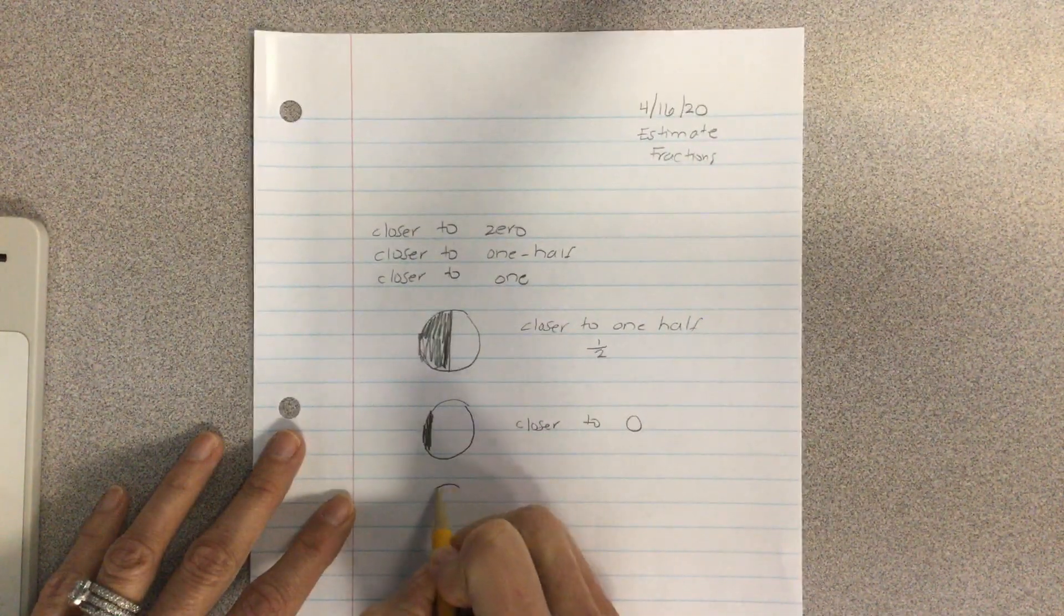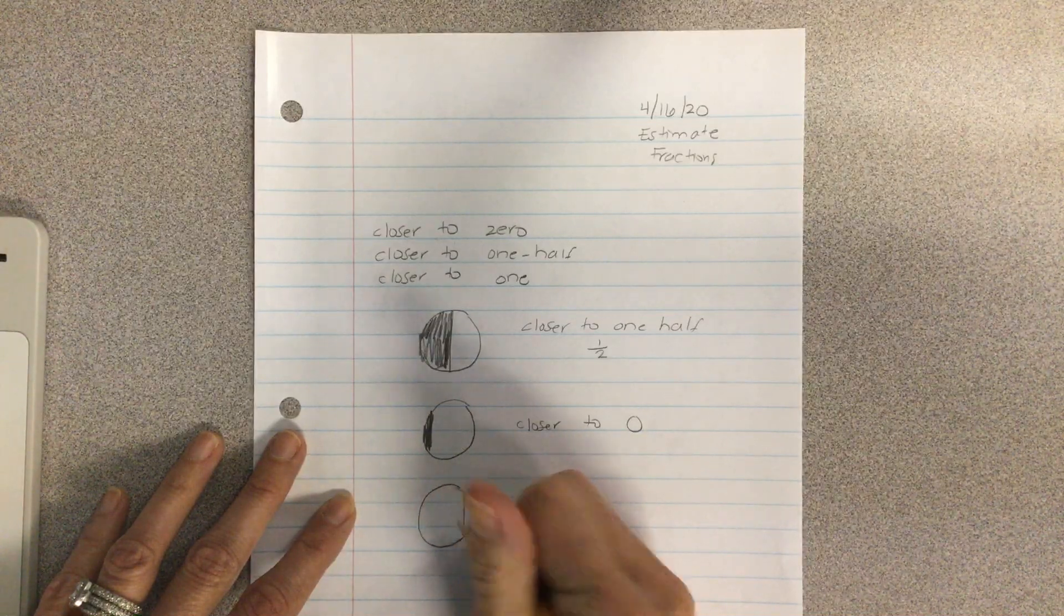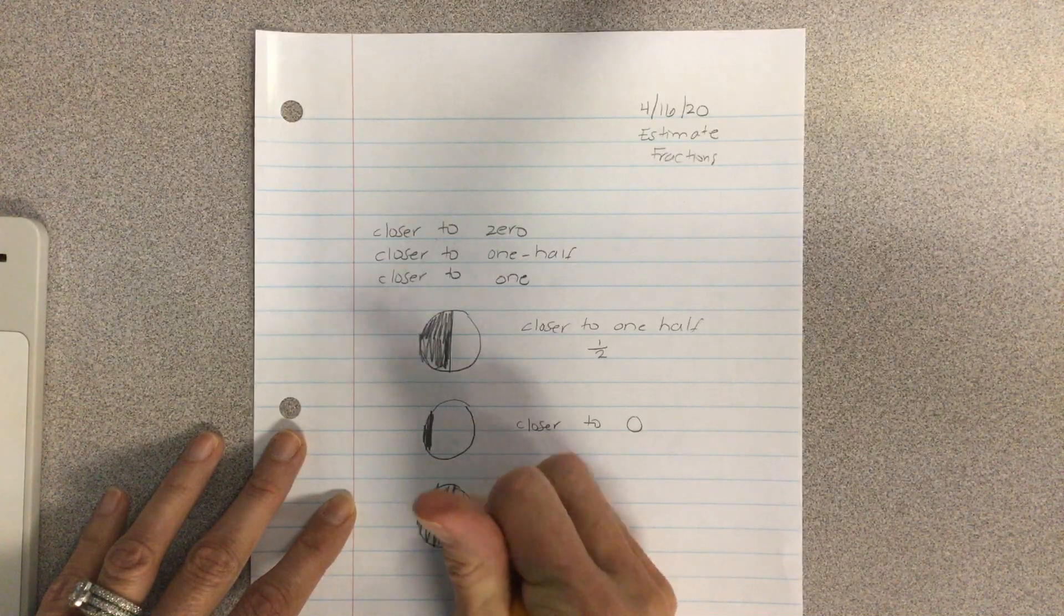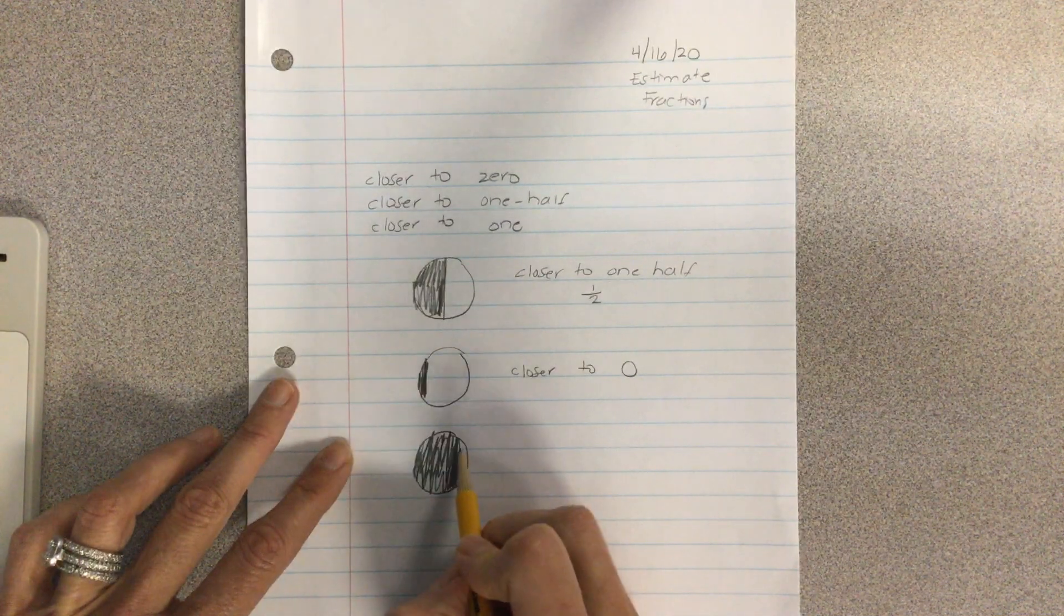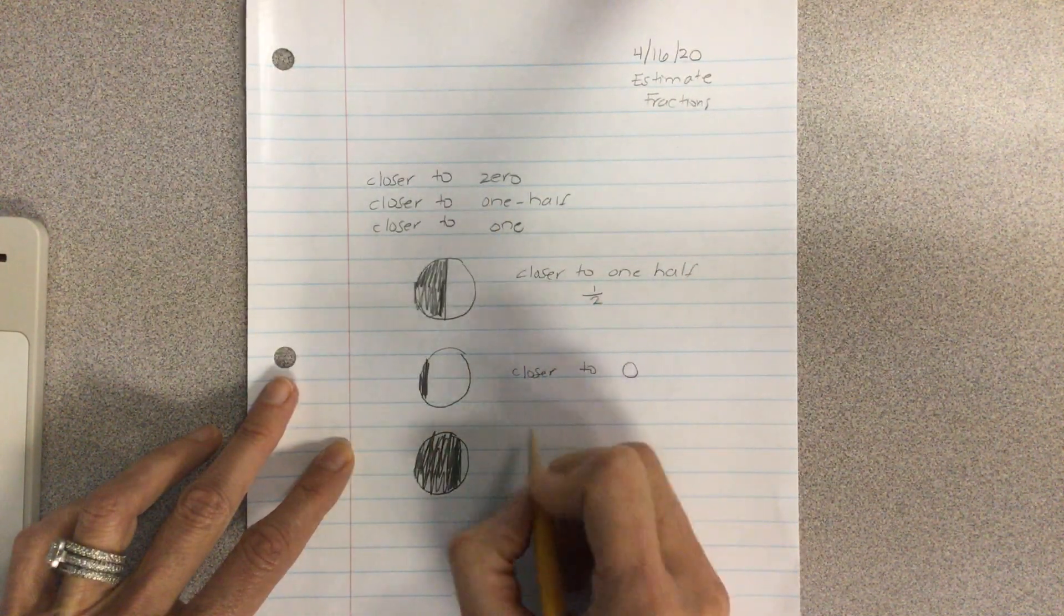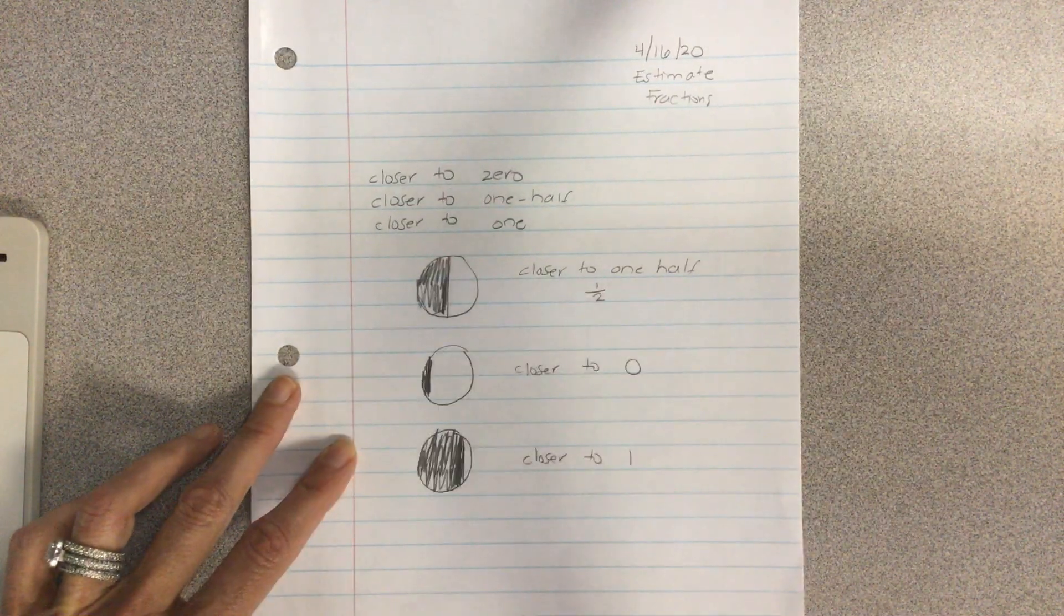And we'll make one more circle, and we'll say this much is shaded. Is that going to be closer to zero, closer to one half, or closer to one? Is that going to be closer to one? And in this instance, it's going to be closer to the whole number one.